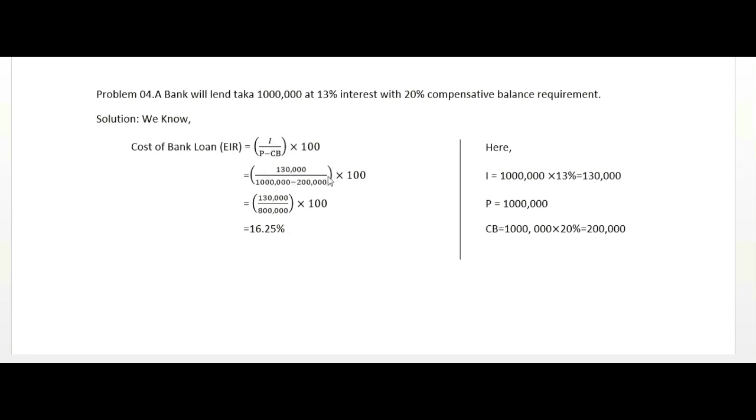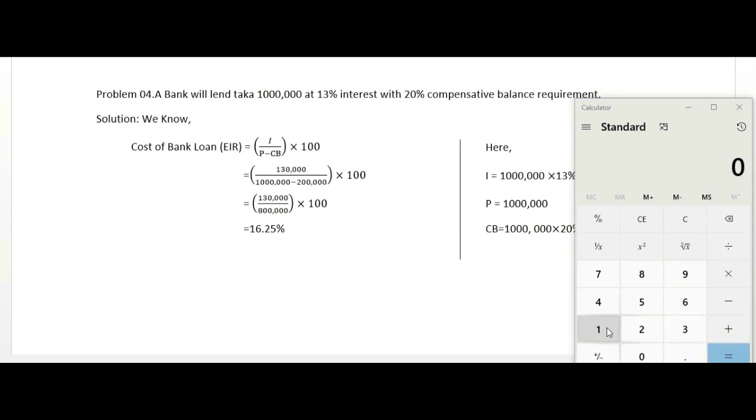So the interest applies to the full amount, but the compensating balance reduces the usable principal. Let me show you the calculation. If we calculate this properly, we need to account for both the interest charged and the balance requirement.